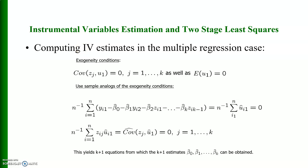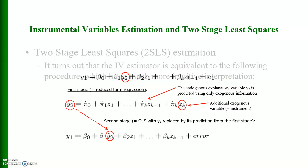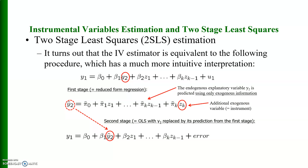Computing IV estimates in the multiple regression case: the exogeneity condition requires covariance of z_j with u₁ equals zero for j = 1 to k, and the expected value of u₁ equals zero. Using sample analogs of these exogeneity conditions yields k+1 equations from which the k+1 estimates β̂₀, β̂₁, …, β̂_k can be obtained. Two-stage least squares (2SLS) estimation turns out to be equivalent to this instrumental variable estimator, with a much more intuitive interpretation.